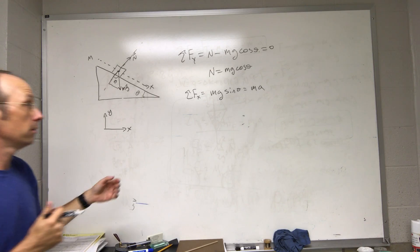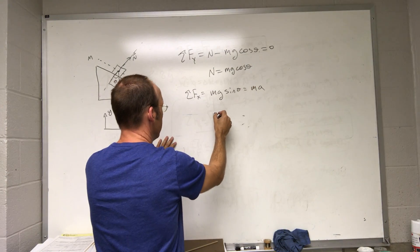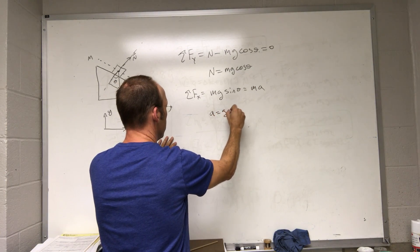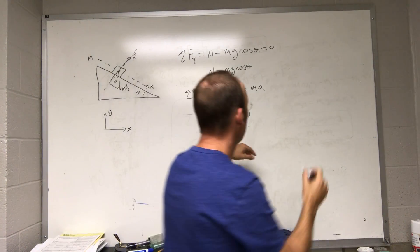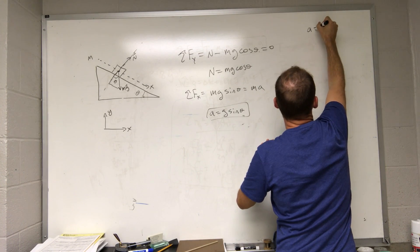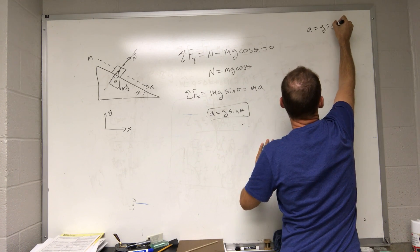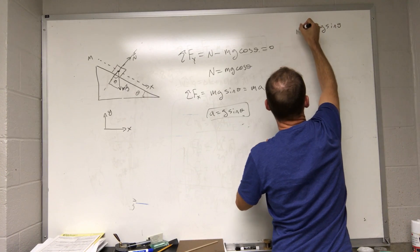So I get mg sine theta equals ma. Now I can solve for a, divide both sides by the mass, and I get a equals g sine theta. That's my acceleration down the plane. I'm going to write it up here. Because that's the number one way I did it.